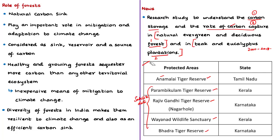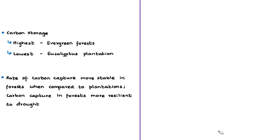Looking at the research outcomes for carbon storage, researchers found that carbon storage was highest in evergreen forests, as these are rich in various plant species. The research also found that teak plantations stored nearly as much carbon as deciduous forests, while eucalyptus plantations had comparatively lower carbon storage levels.